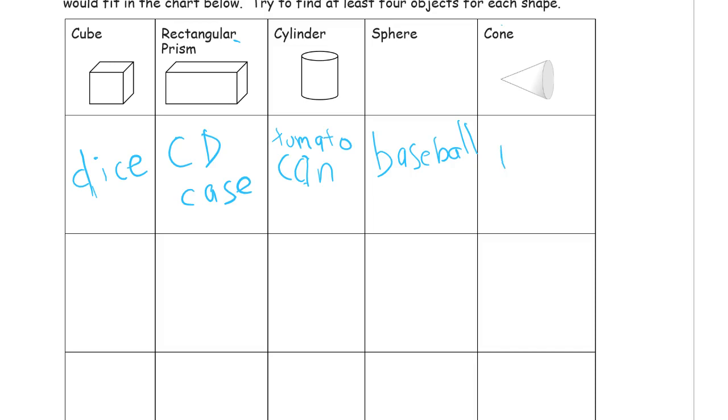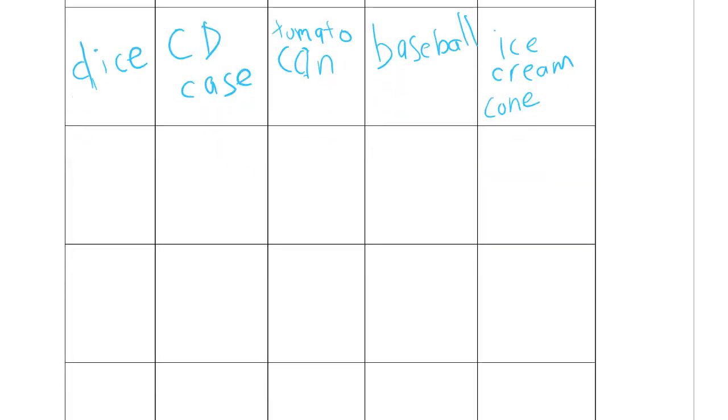And for cone, I can think of an ice cream cone. There's not a lot of really perfectly cone-shaped things that you're going to probably find around your house. You may only be able to find one if you even have ice cream cones. Whatever you can think of that might be cone-shaped. And just list more of them. I just listed one each. You're going to find other things, but you may be able to find stuff that's like that.